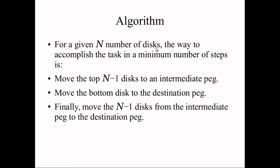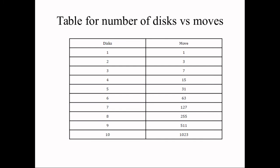The algorithm for the Tower of Hanoi for n discs is: Step 1 — move the top n-1 discs to the intermediate peg; Step 2 — move the bottom disc to the destination peg; Step 3 — move the n-1 discs from the intermediate peg to the destination peg. This process repeats recursively.